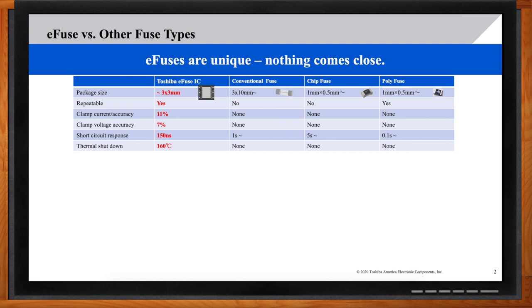A chip fuse, five seconds, but a poly fuse is about 0.1 seconds. So, at our 150 nanosecond range, that's very much better.